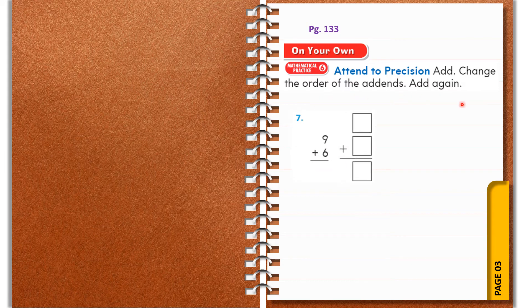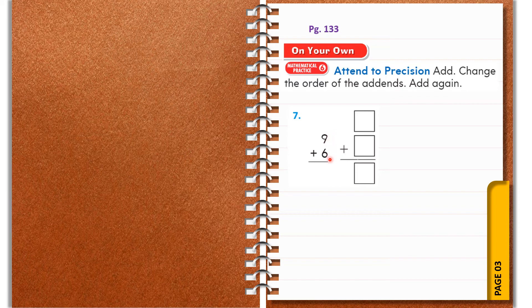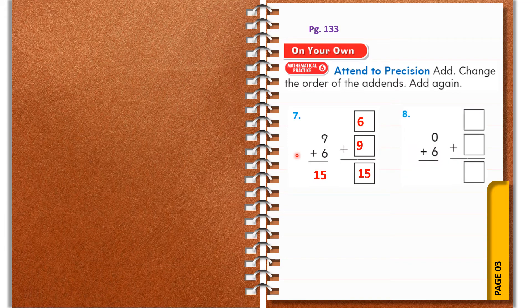Page number 133, On Your Own: add, change the order of the addends, and add again. Question number seven — you can try to solve these questions on your own and check your answers along with me. You can pause the video and start solving. Nine plus six: draw nine counters, add six more counters, and check the sum. Nine plus six gives you fifteen. Change the order: six plus nine equals fifteen.